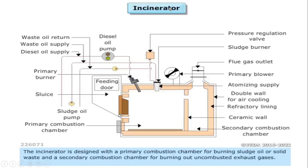Before starting the video of the incinerator, I will tell you about the components of the incinerator. So it's a two-wall type of incinerator. Basically, it consists of a primary combustion chamber and a secondary combustion chamber. It's called the primary combustion chamber because the main combustion takes place here, and the remaining combustion takes place in the secondary combustion chamber. The primary combustion chamber consists of two things: one is the primary burner and the other is the sludge burner.